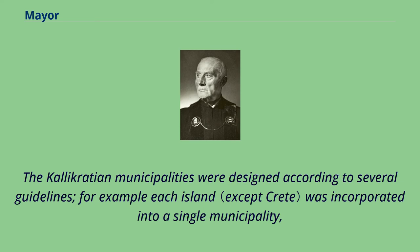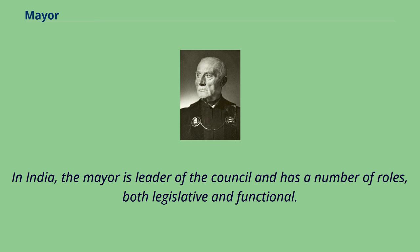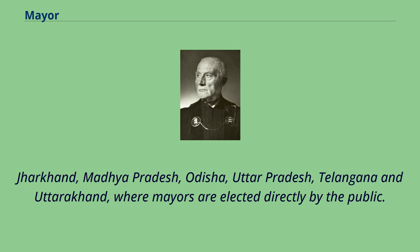The Calicratis municipalities were designed according to several guidelines; for example, each island was incorporated into a single municipality, while the majority of small towns were consolidated so as to have an average municipal population of 25,000. In India, the mayor is leader of the council and has a number of roles, both legislative and functional. In most Indian states mayors are elected indirectly among the council members themselves, except in nine states — Bihar, Chhattisgarh, Haryana, Jharkhand, Madhya Pradesh, Odisha, Uttar Pradesh, Telangana, and Uttarakhand — where mayors are elected directly by the public.